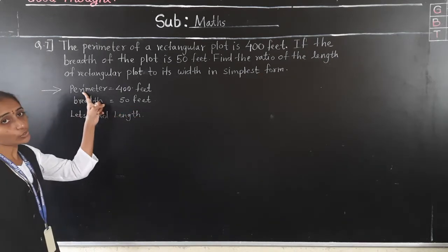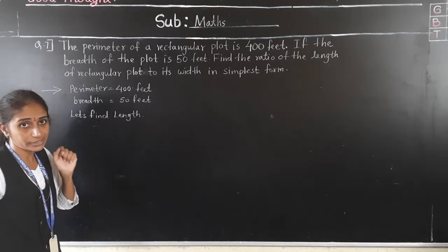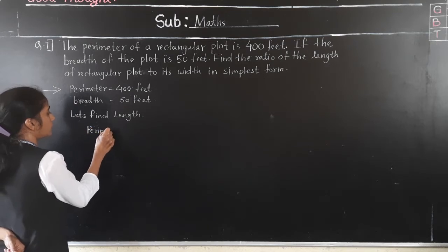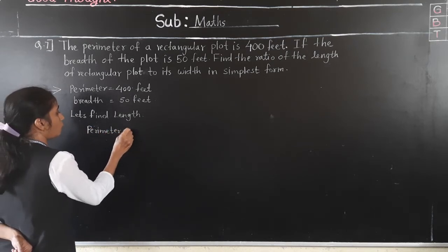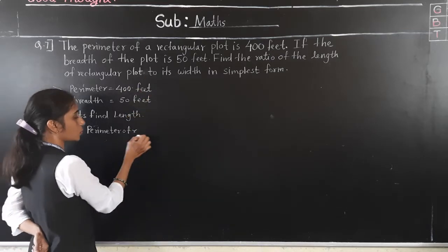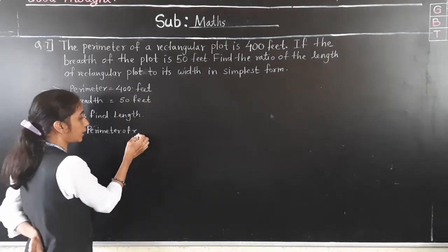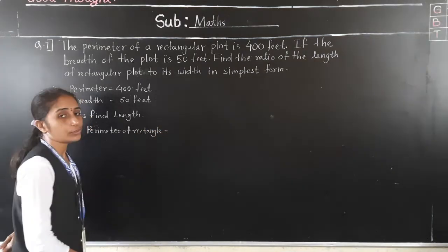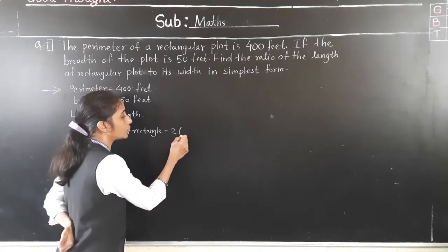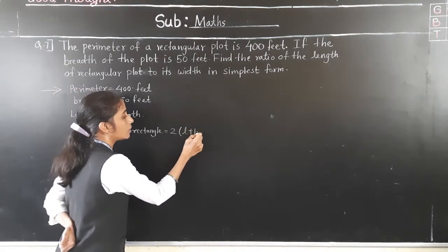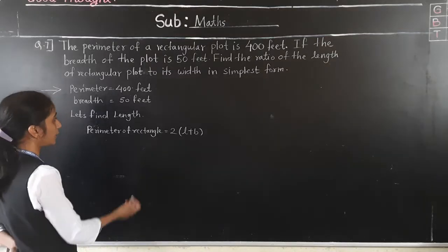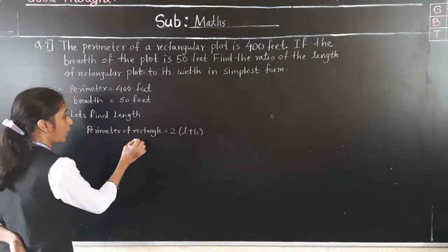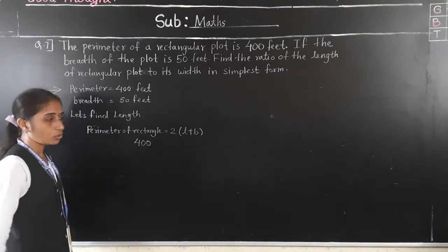We know the perimeter. The formula for the perimeter of a rectangle is 2 into bracket length plus breadth. Perimeter is 400 feet.